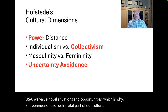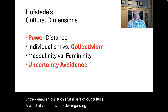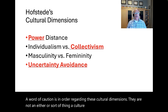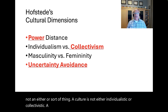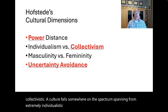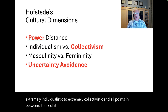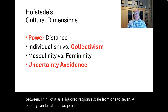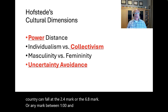A word of caution regarding these cultural dimensions: they are not an either-or sort of thing. A culture is not either individualistic or collectivistic; it falls somewhere on the spectrum from extremely individualistic to extremely collectivistic and all points in between. Think of it as a Likert response scale from 1 to 7 — a country can fall at the 2.4 mark or the 6.8 mark. It's not black and white; it's all shades of gray.